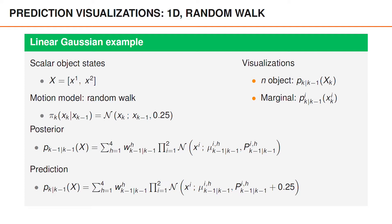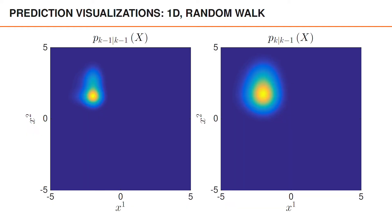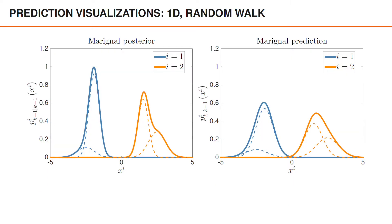For the visualizations, we will look at both the n-object density as well as the marginal densities for each of the two objects. First we have the n-object densities — the posterior on the left and the predicted on the right. This visualization clearly shows that the uncertainty of the two object states has increased in the prediction, which is due to the process noise. We can also look at the marginal densities. Again, the posterior is on the left and the prediction is on the right. Here we've plotted the Gaussian mixture as a solid line, and the individual Gaussian components are plotted as dashed lines. Again, we can see how the prediction has introduced more uncertainty for each object.